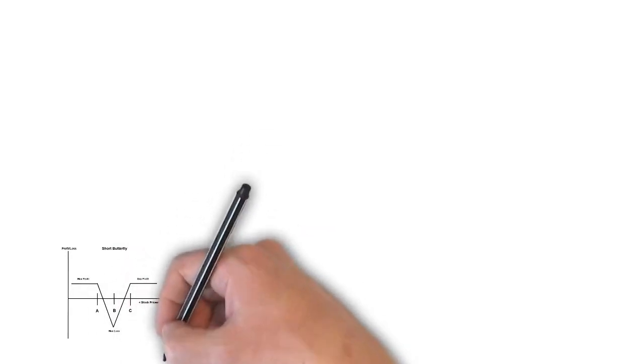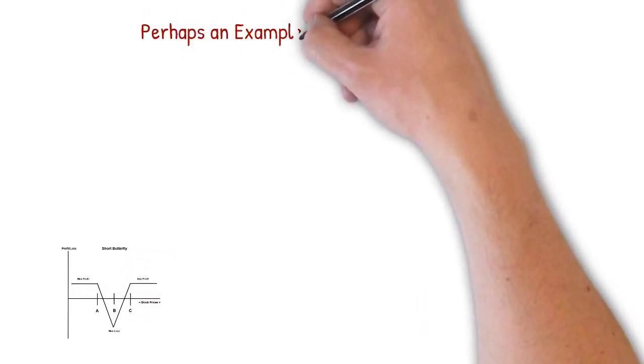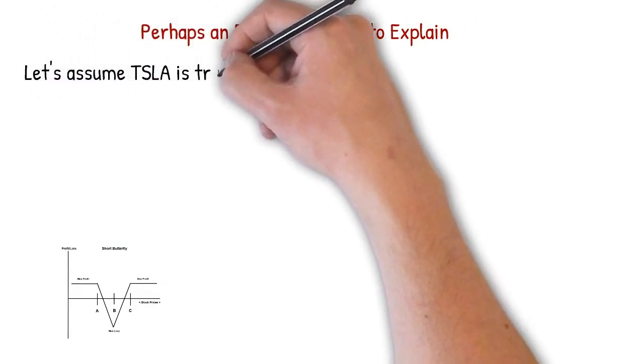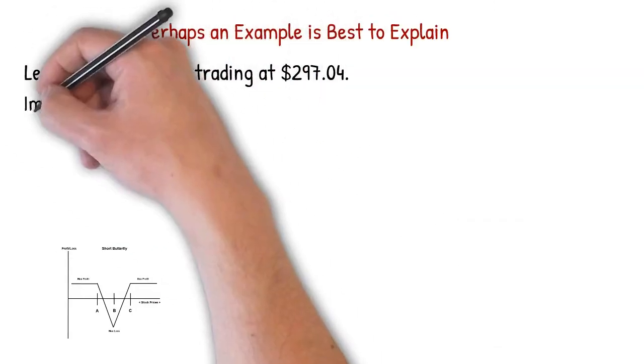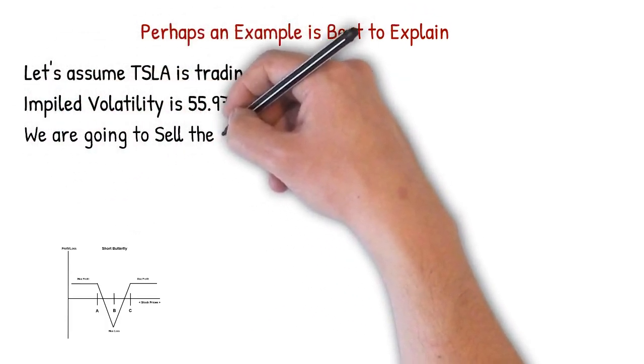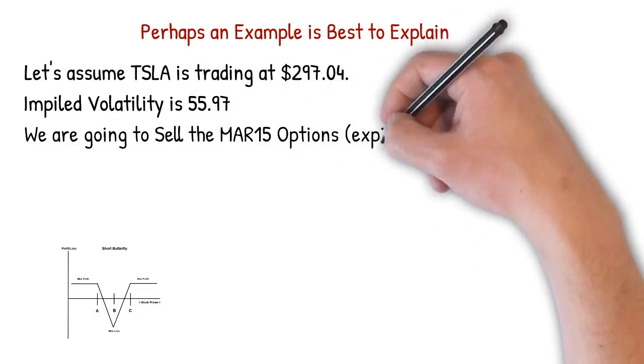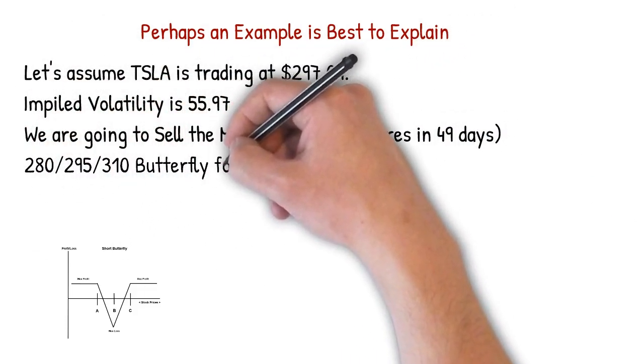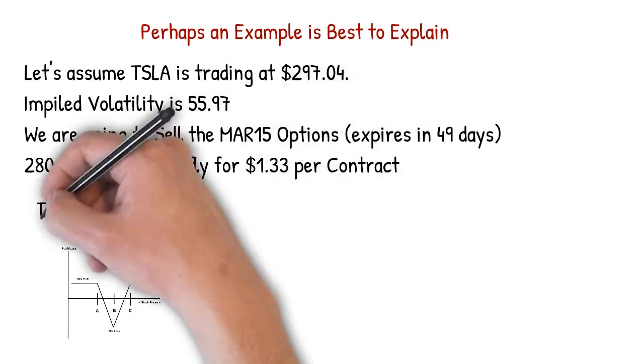Perhaps the best way to explain the differences would be with an example. Let's assume Tesla is trading at 297.04 and that implied volatility is currently at 55.97. We are not going to get into implied volatility today, but you can get more information on our website about it. It is important in the way we trade butterflies. We are going to sell the March 15 options which expire in 49 days.